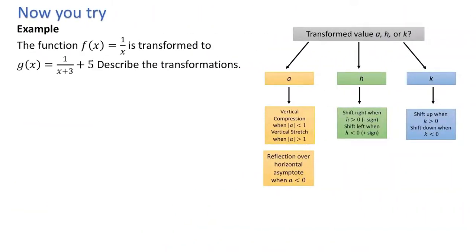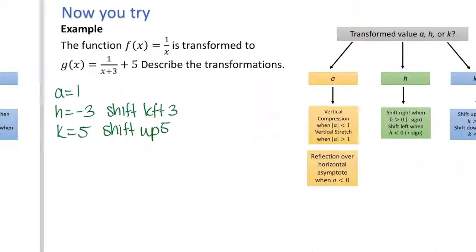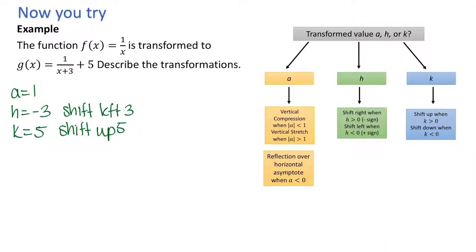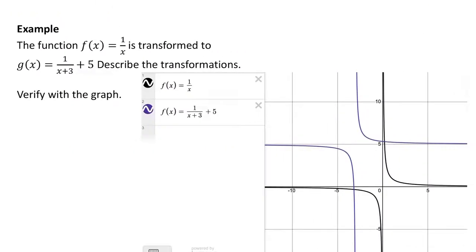Pause the video and try this next example on your own. a equals 1, so there is no change from a. h equals negative 3, so that creates a shift to the left — that's why there's a plus sign in the problem. k equals 5, so the graph is shifted up. Graphing confirms the graph in purple is shifted left and up.